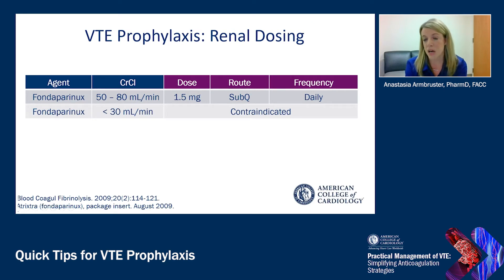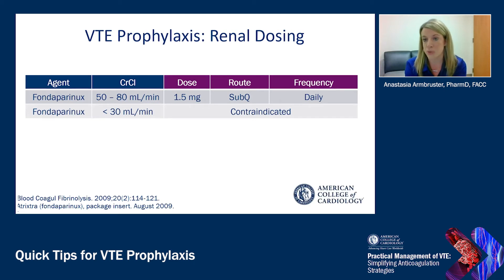Fondaparinux, while not used greatly in clinical practice for the acutely ill medical patient, is less of an ideal option for patients with renal dysfunction. Even with patients at a creatinine clearance of 50 to 80, there are dosing recommendations to reduce the dose to 1.5 milligrams sub-Q daily. For those patients with a creatinine clearance less than 30, the agent becomes contraindicated, as the drug can start to accumulate in these patients.